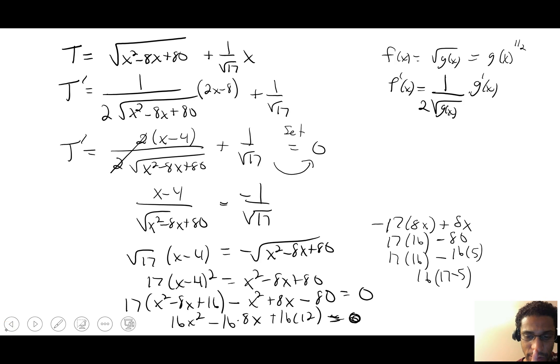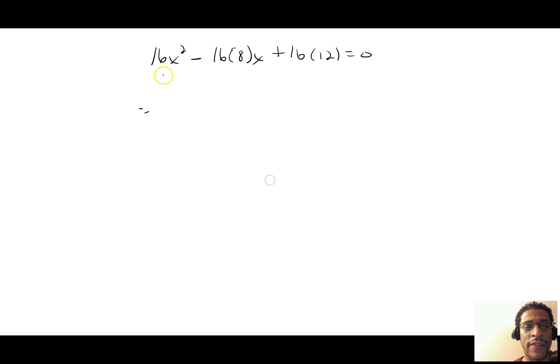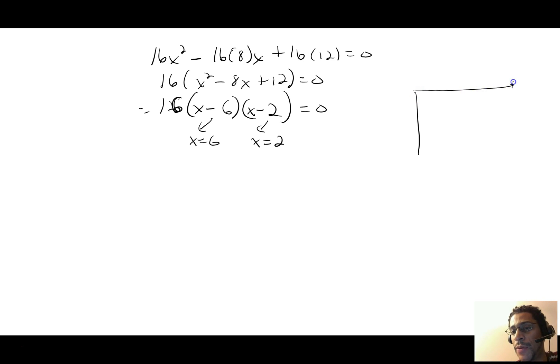We're going to subtract over the x squared, add over the 8x, subtract the 80 over. 17x squared minus x squared will be 16x squared. 17 times a negative 8 and then plus an 8x, all together is a negative 16 of those 8x's. And then 17 times 16 minus the 80, which is 16 times 12. Factoring out the 16, we're left with x squared minus 8x plus 12 equals 0. That factors, two numbers that multiply to give you 12 and add up to 8. So either x is 6 or x is 2. Remember the context of the problem, though. This total distance was 4. x has to be something between 0 and 4. x can't be equal to 6. So x equals 2 is the answer.